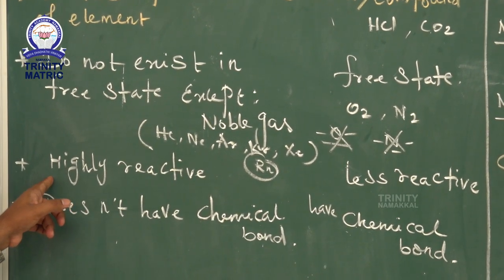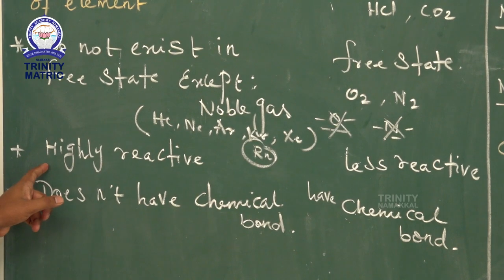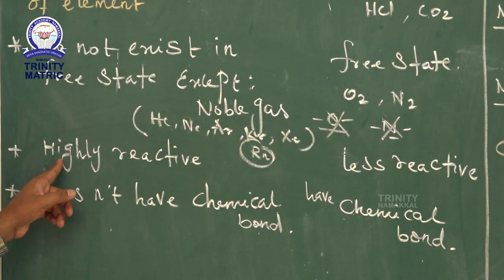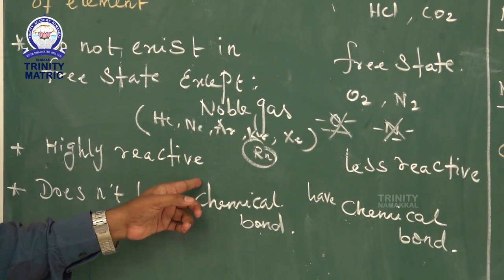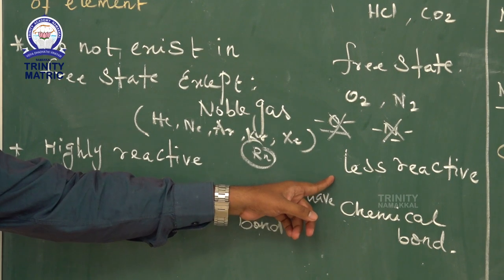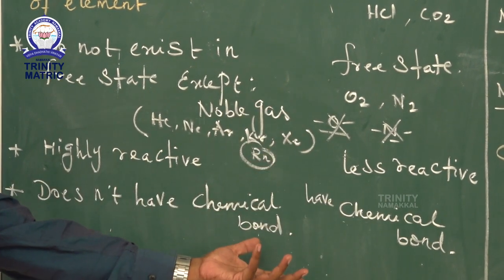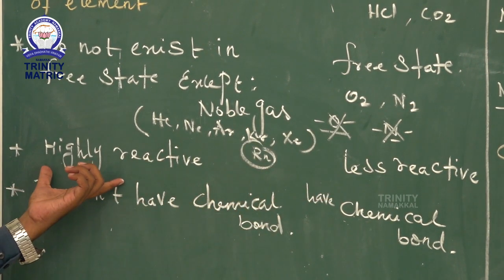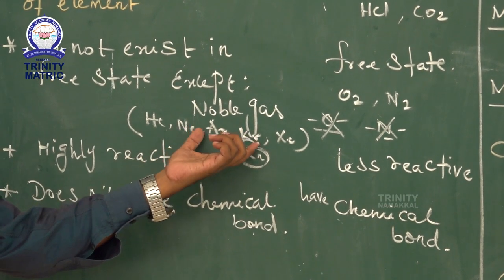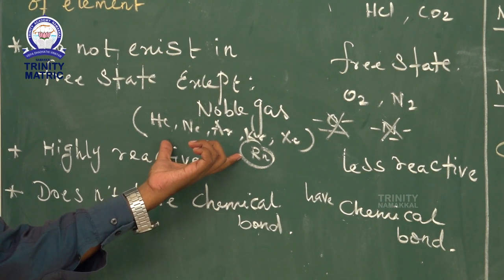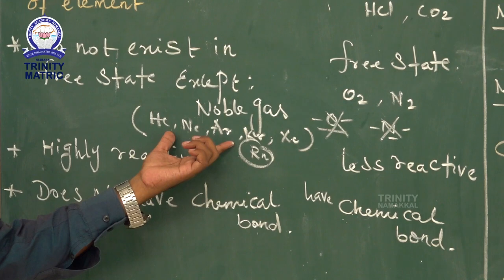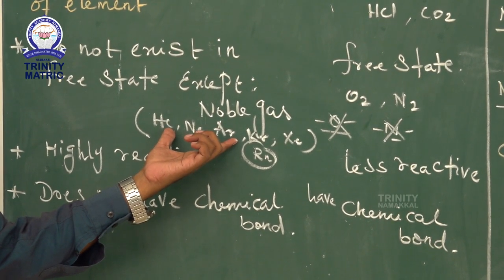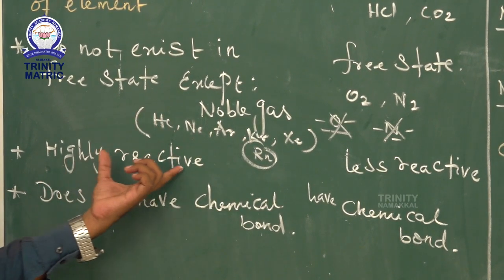The third difference: atoms are highly reactive. According to modern atomic theory, the atom is the smallest particle of an element that takes part in chemical reactions. Molecules are less reactive because the molecule must first be split into atoms before the atoms take part in the reaction. Exception: noble gases are highly non-reactive; they are stable, which is why they are also called inert gases.